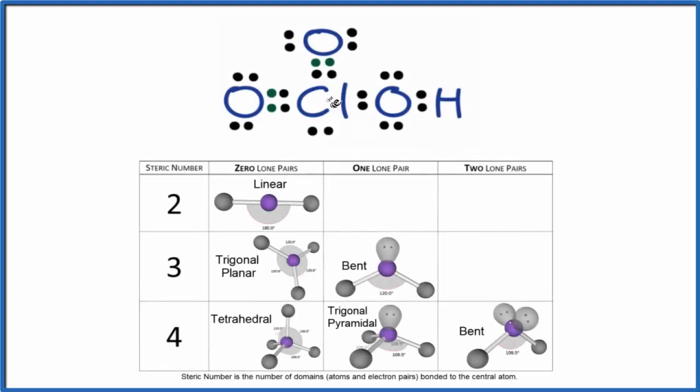In this video, we're going to take a look at the molecular geometry of HClO3. That's chloric acid.